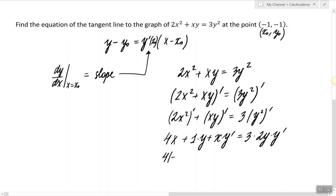So we have 4 times negative 1 plus 1 times negative 1 plus negative 1 times y prime equals 6 times negative 1 times y prime. Simplifying everything gives us negative 5 minus y prime equals negative 6y prime, therefore y prime equals 1.